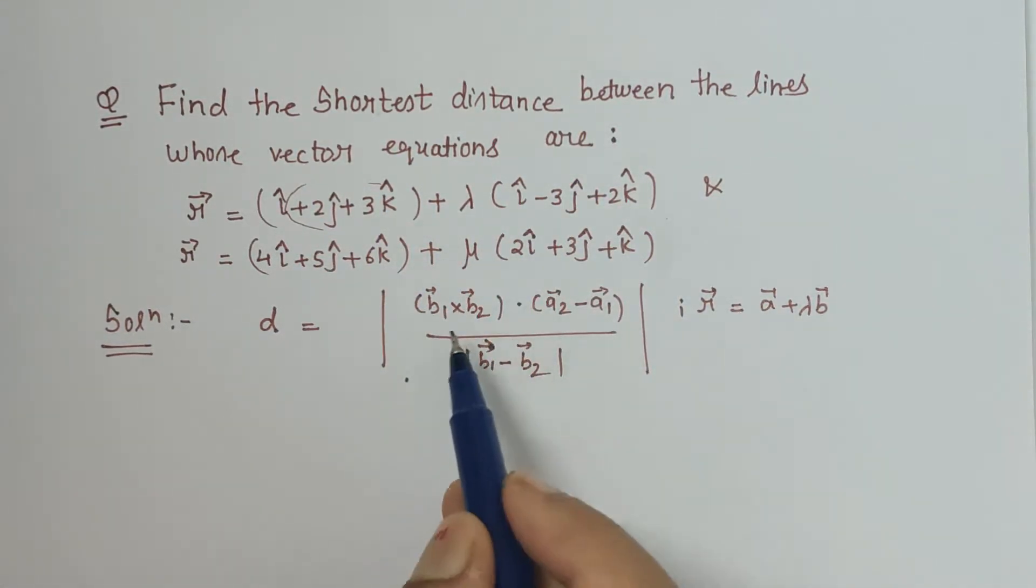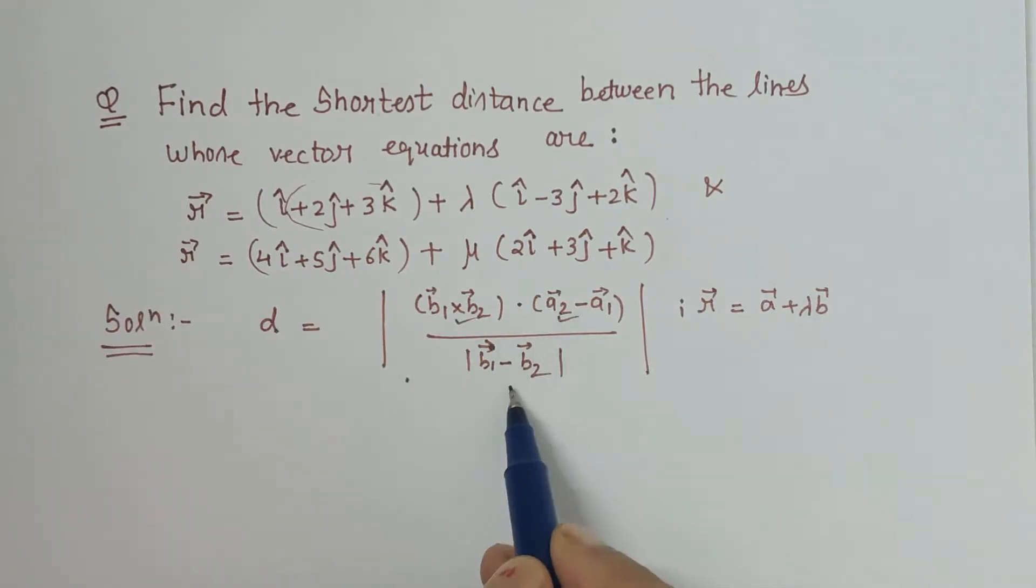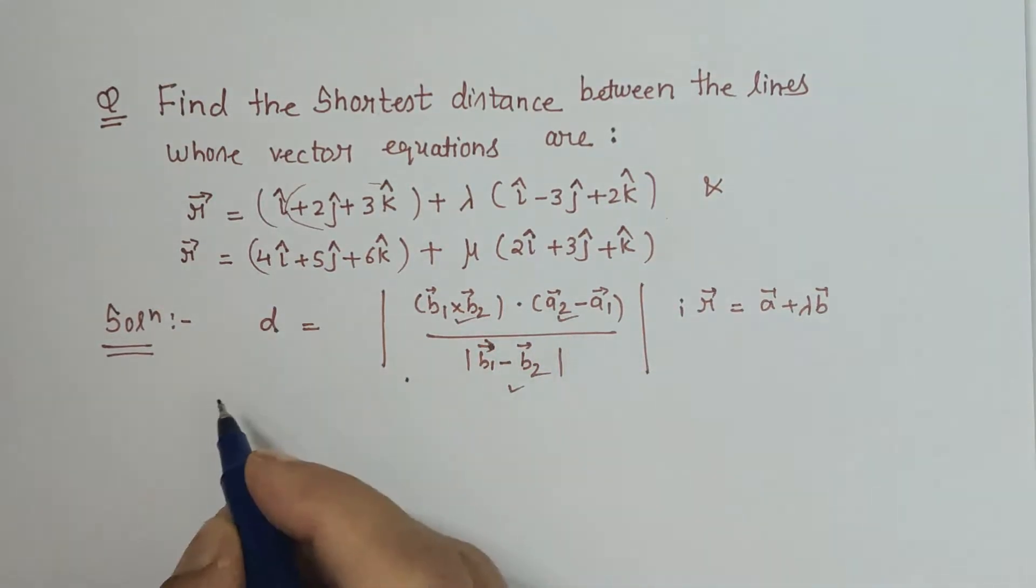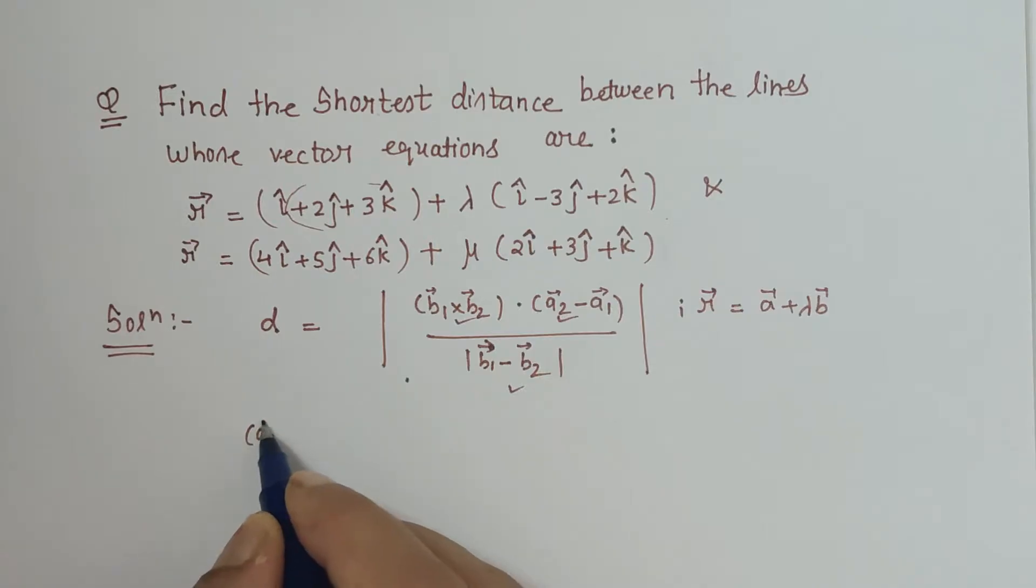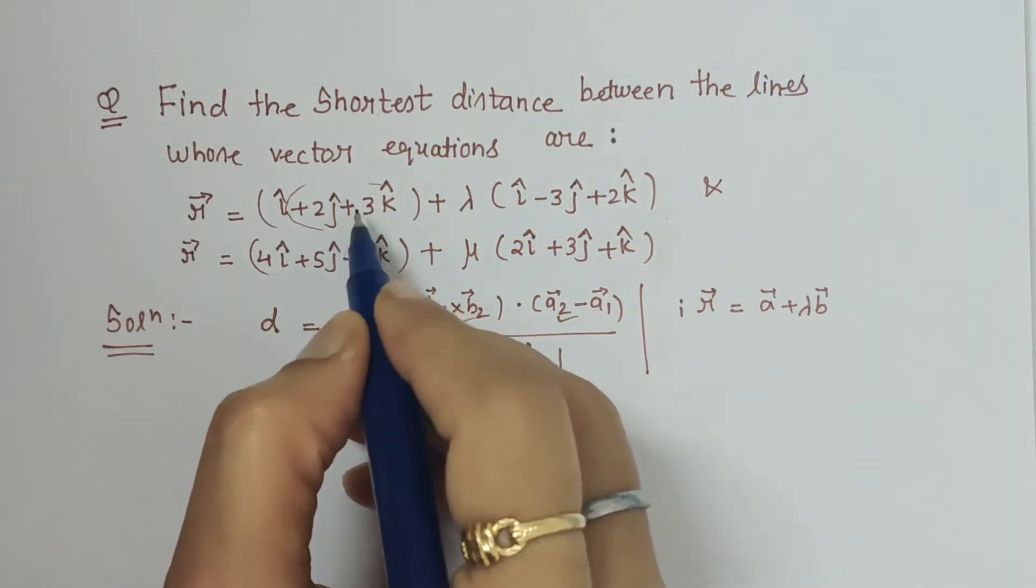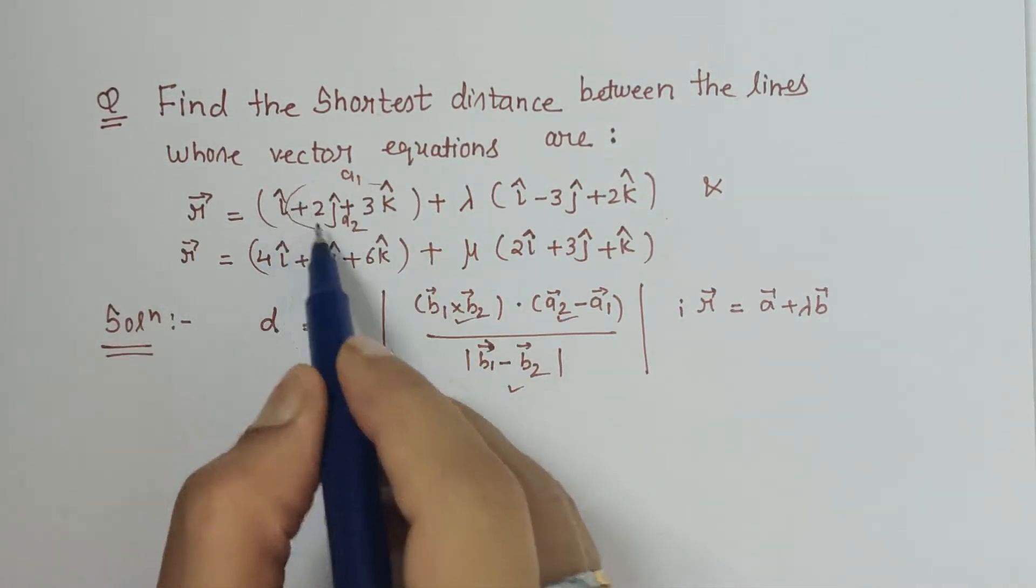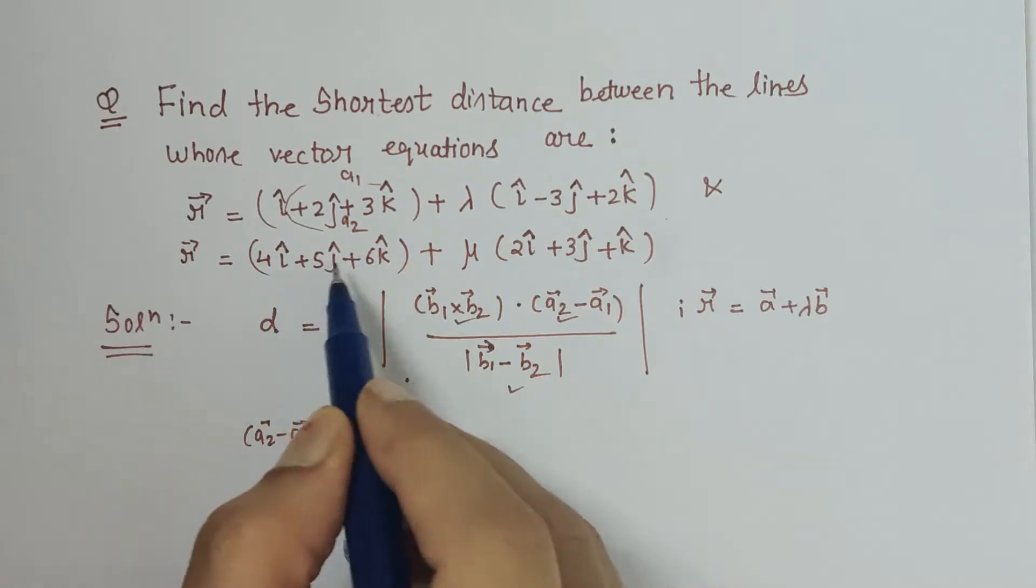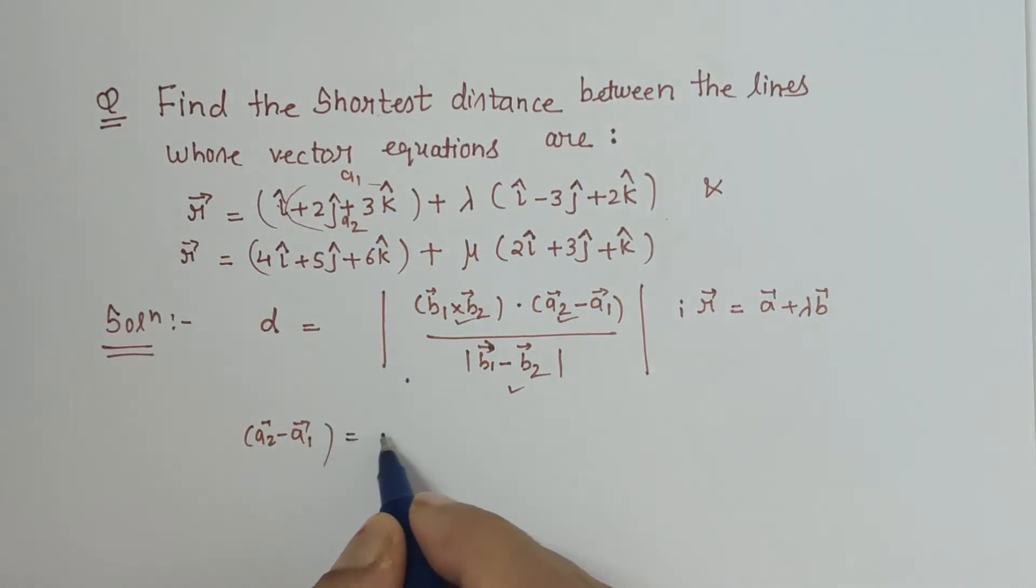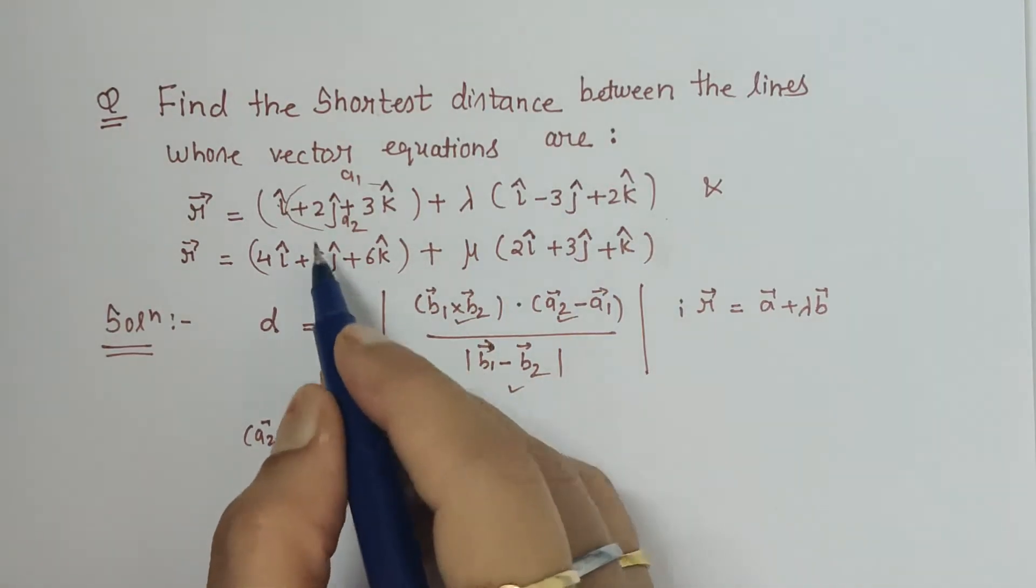So let us find out each one by one. Here a2 minus a1, let us check what is that. a1 is this, a2 is this. So a2 minus a1: 4 minus 1 is 3 i cap, then 5 minus 2 is plus 3 j cap, then 6 minus 3 is plus 3 k cap.